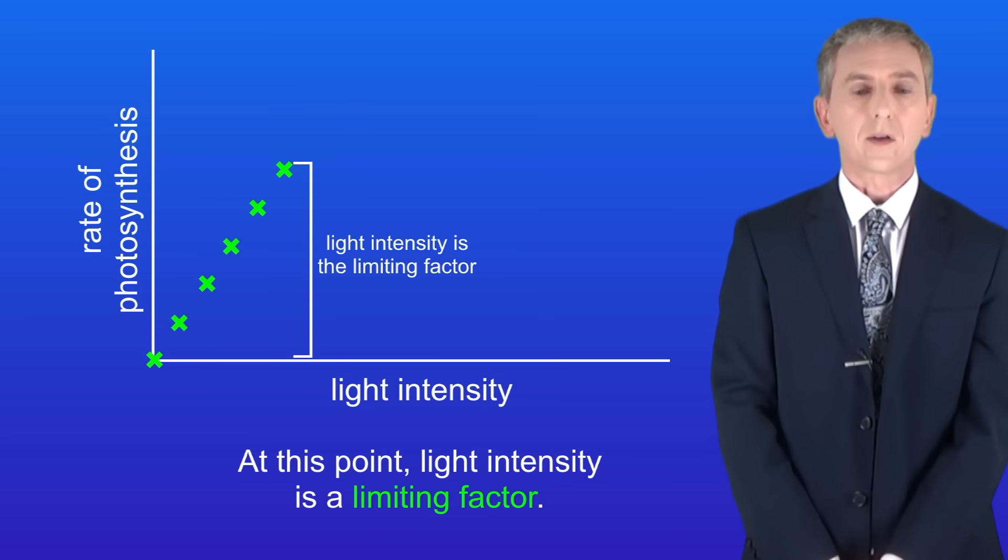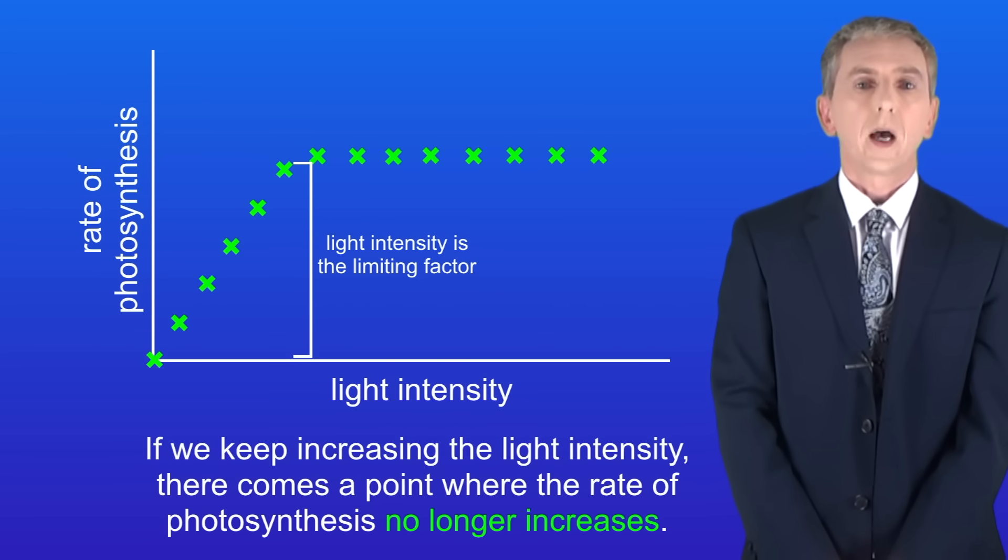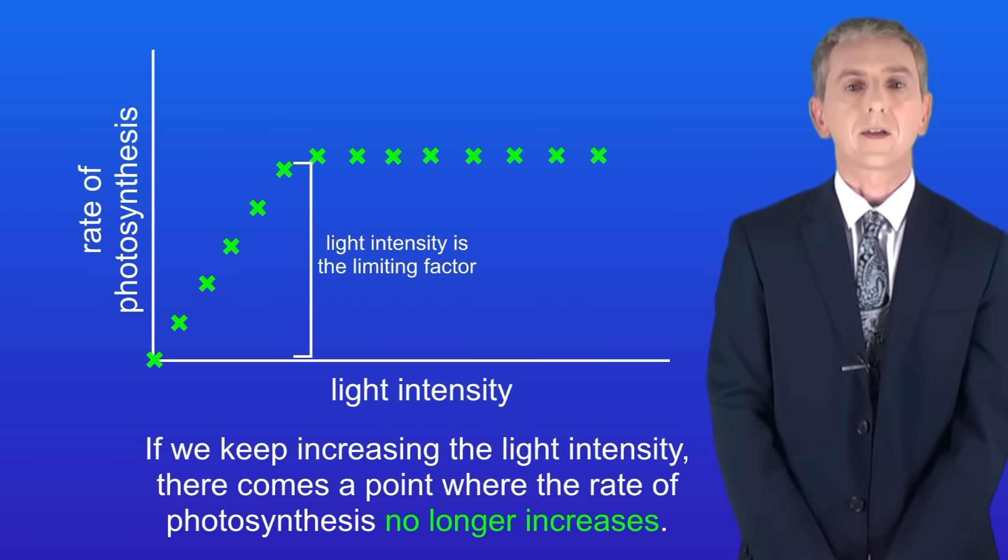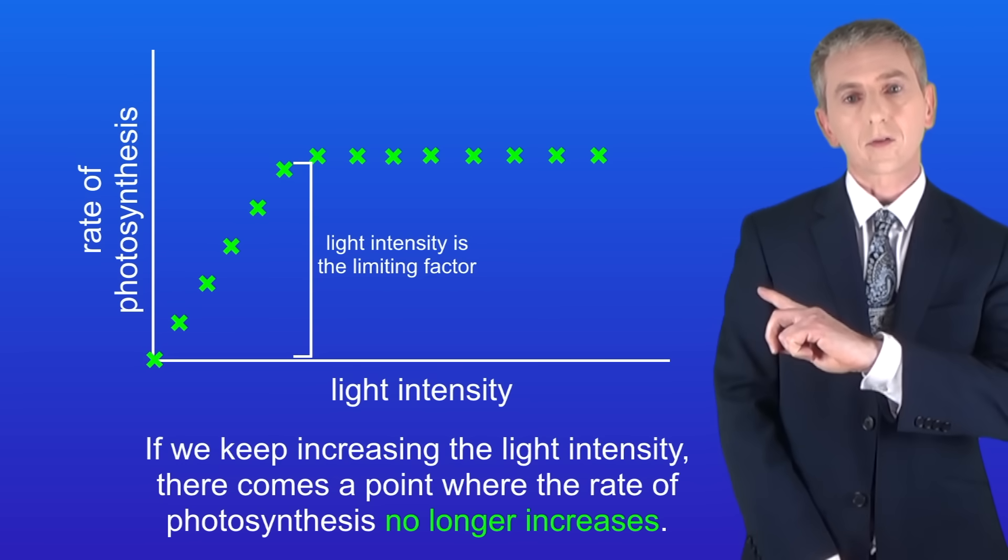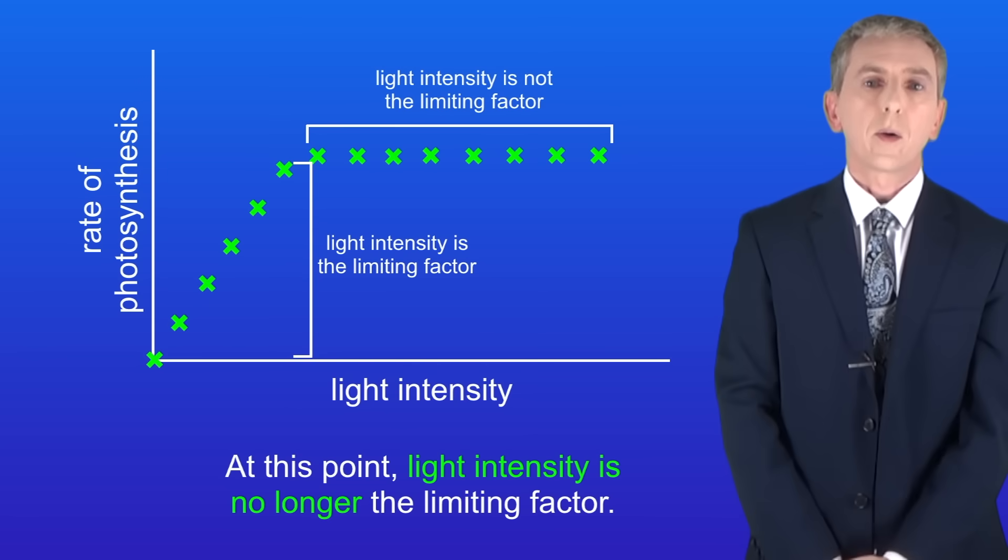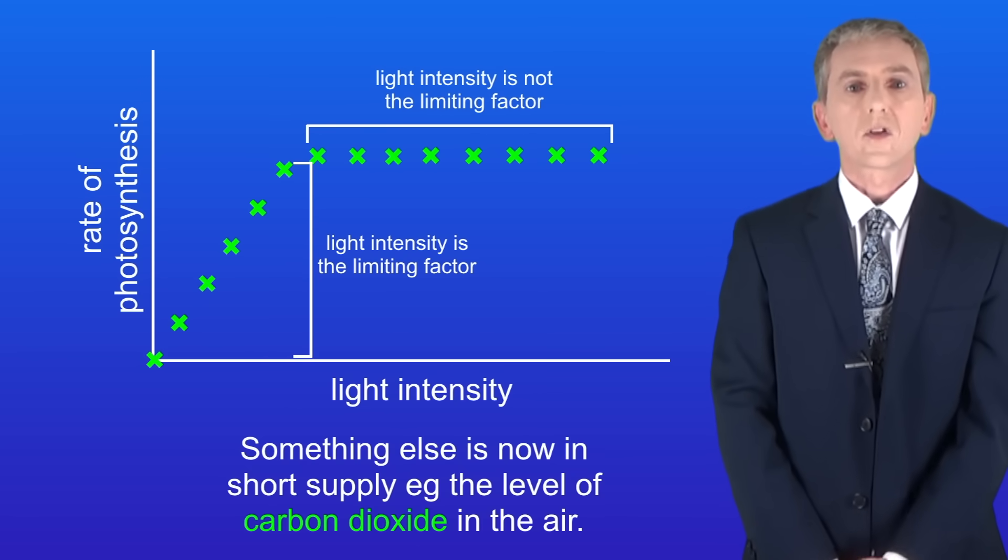Scientists say that at this point light intensity is a limiting factor. Now if we keep increasing the light intensity, there comes a point where the rate of photosynthesis no longer increases and it levels off. At this point, light intensity is no longer the limiting factor. Something else is now in short supply, for example the level of carbon dioxide in the air.